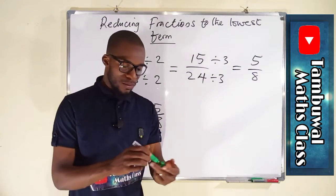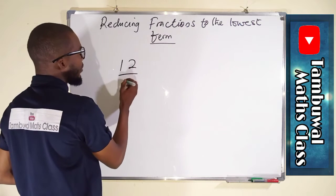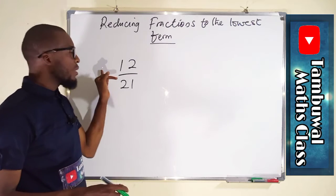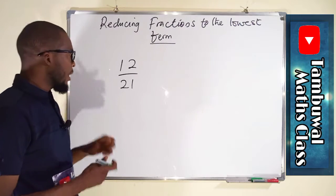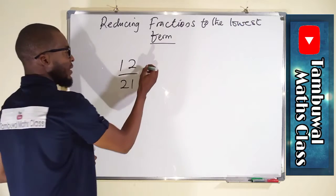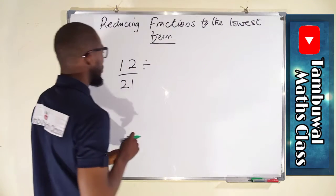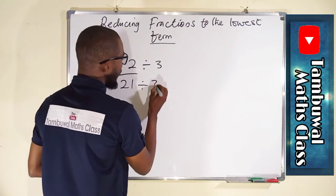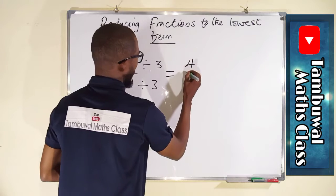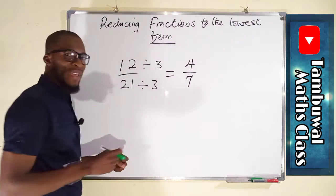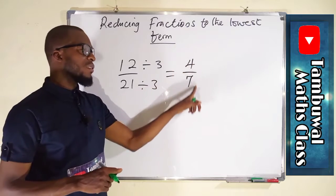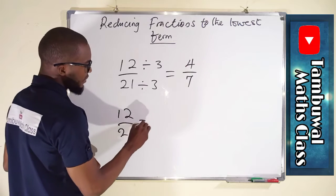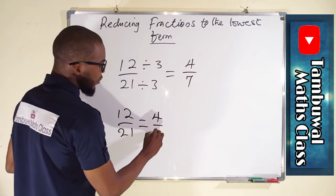Let us take another one: 12 divided by 21. 12 is an even number but 21 is an odd number. However, they share a common factor — 3 goes into 12 four times and into 21 seven times, giving us 4 over 7. We stop here because 4 and 7 have no common factor. Therefore 12 over 21 equals 4 over 7 in its lowest term.